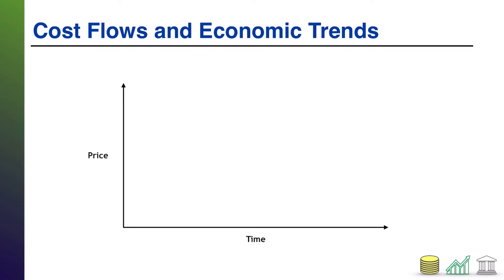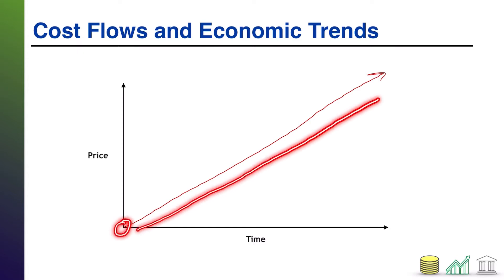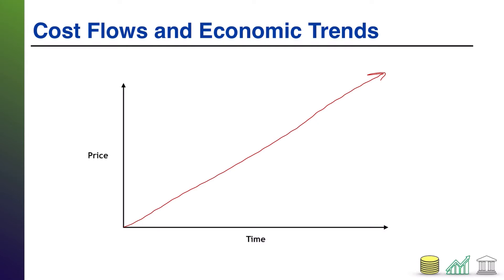When prices of consumer goods are going up, we call that inflation. That would be represented by an arrow going upward on the graph — we start off at a lower price and over time grow to a higher price. On the other hand, when prices tend to go down over time, that's known as deflation, shown by a downward arrow.